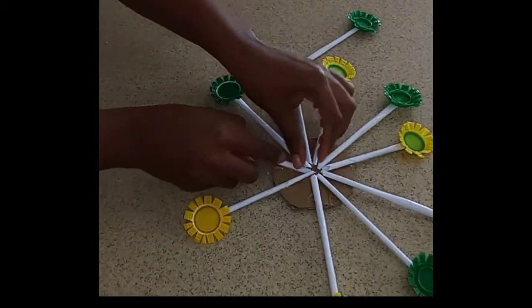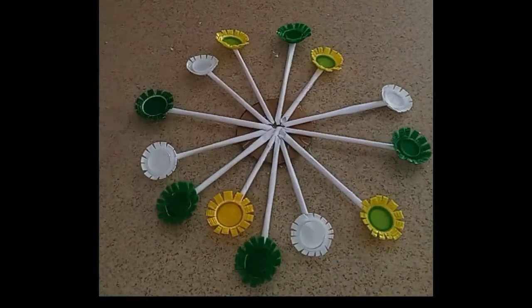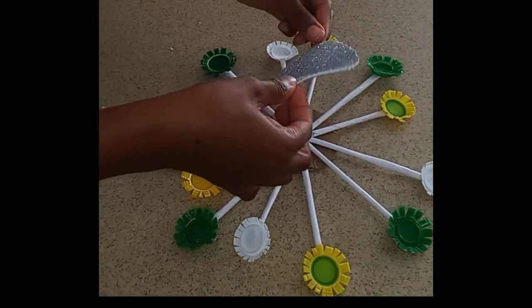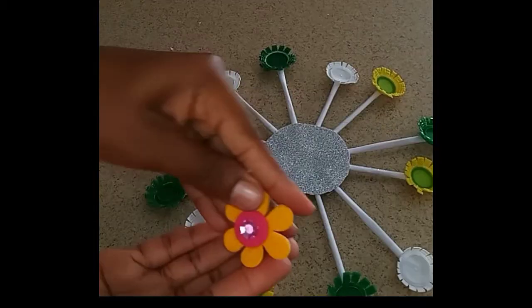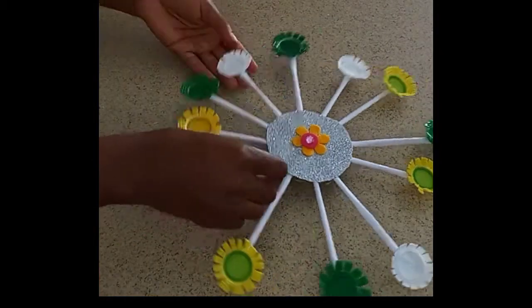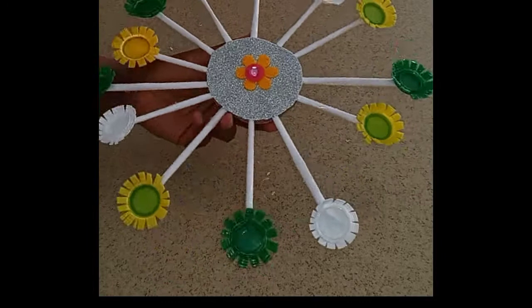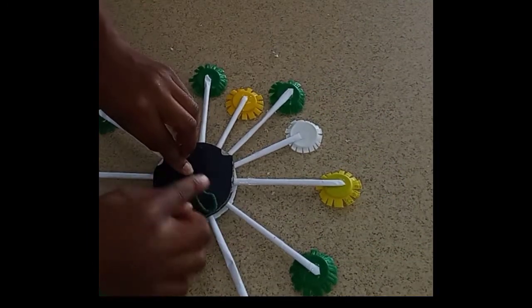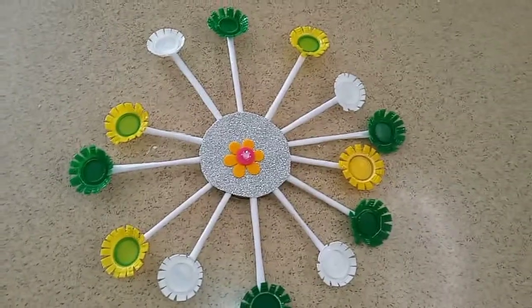After I have done that, I just went in with this piece of glitter foam paper. I cut out a circle, this is just to hide my cardboard. Then I went in with this foam flower that I had, placed it in the center to make a cute design. Then I flipped it over, added my little string to make my little hanger. And this is the finished look.